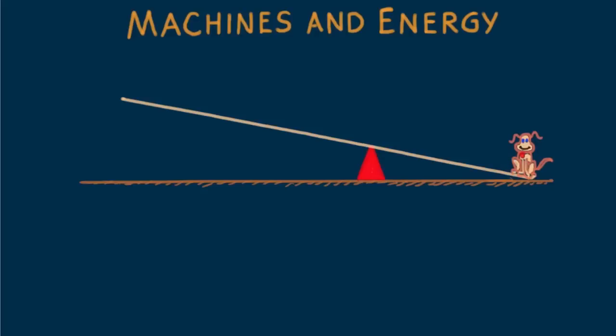A lever consists of a length of wood or a metal bar supported by a fulcrum, which is the red triangular support in the figure. A lever can multiply force or simply change the direction of an applied force. In this case, an applied force on the left end lifts a load, our dog Bow, on the other end.